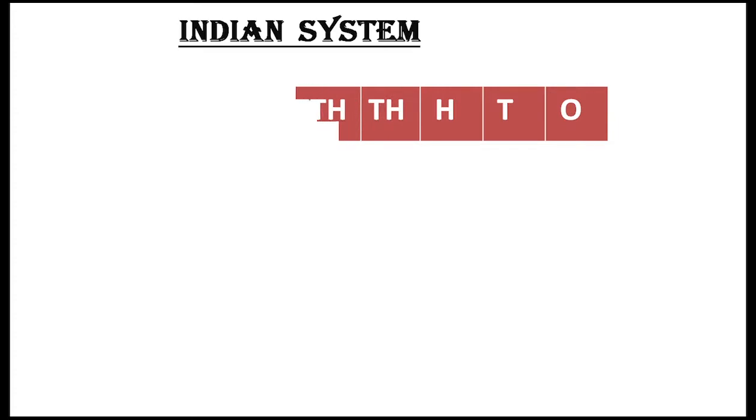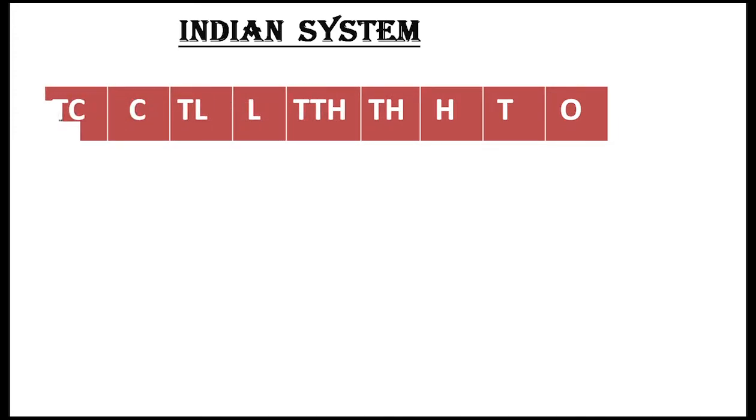In the Indian system, the place values are: ones, tens, hundreds, thousands, ten thousands, lakh, ten lakh, crore, and ten crore.